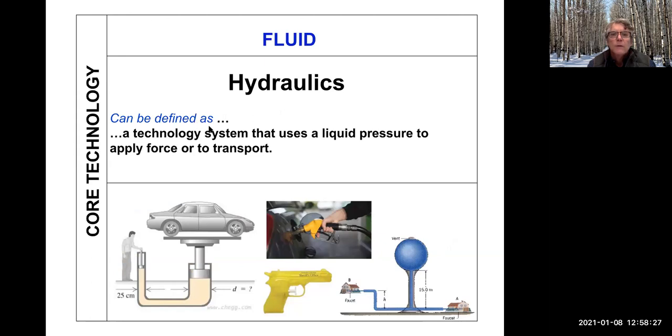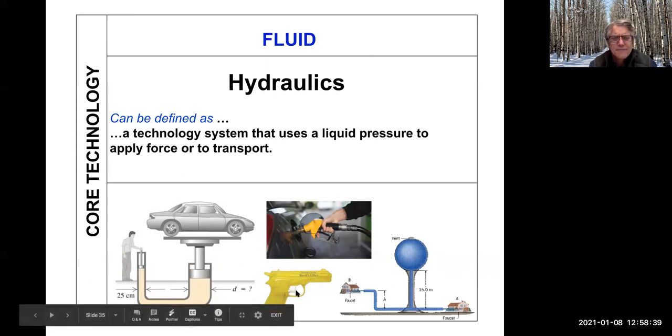Hydraulics. Hydraulics can be defined as a technology system that uses liquid pressure to apply force or to transport. I'm like, why is there a gun in fluid technologies? How does that work? It's a squirt gun. So you pull the trigger and it squirts. That's a fluid technology. This is a basic representation of a hydraulic lift. The way a hydraulic lift works is the idea that you have a reservoir and you have a small piston and a large piston. The small piston can exert a lot of pressure on the liquid. By pushing on the small piston, this liquid goes down and this liquid will go up, pushing up the car. That is how hydraulics work.